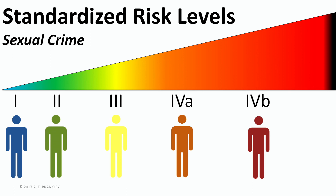Another note is that most sexual risk tools are not able to discriminate between levels 4b and 5 across that 85% threshold. This is for many reasons. One is that there are not a lot of individuals, thankfully, who are at level 5 risk for sexual crime and released into the community. Another is that a lot of information is needed about risk to measure someone who is 8 times higher risk than the average person. Most risk tools weren't designed with that in mind.